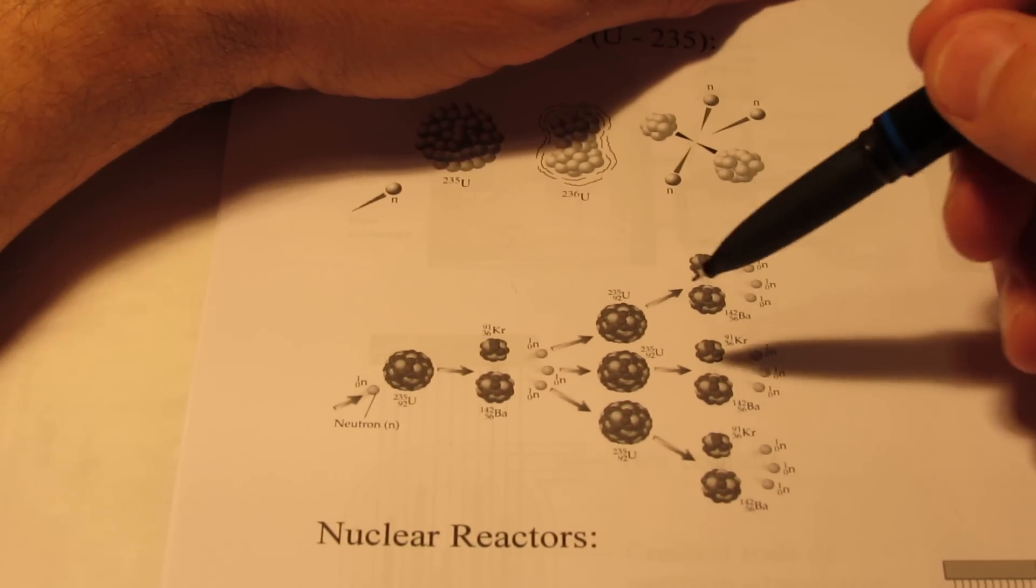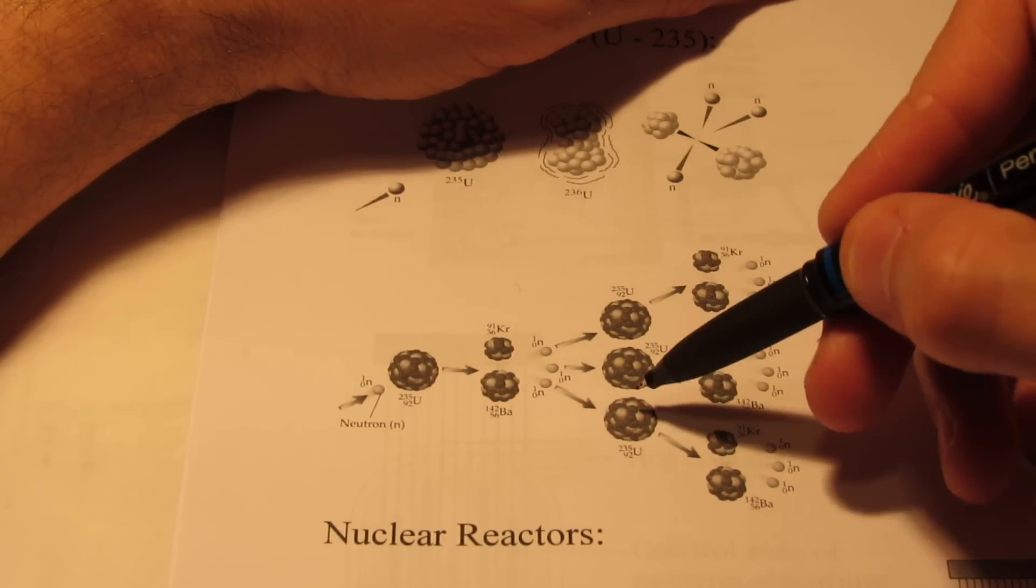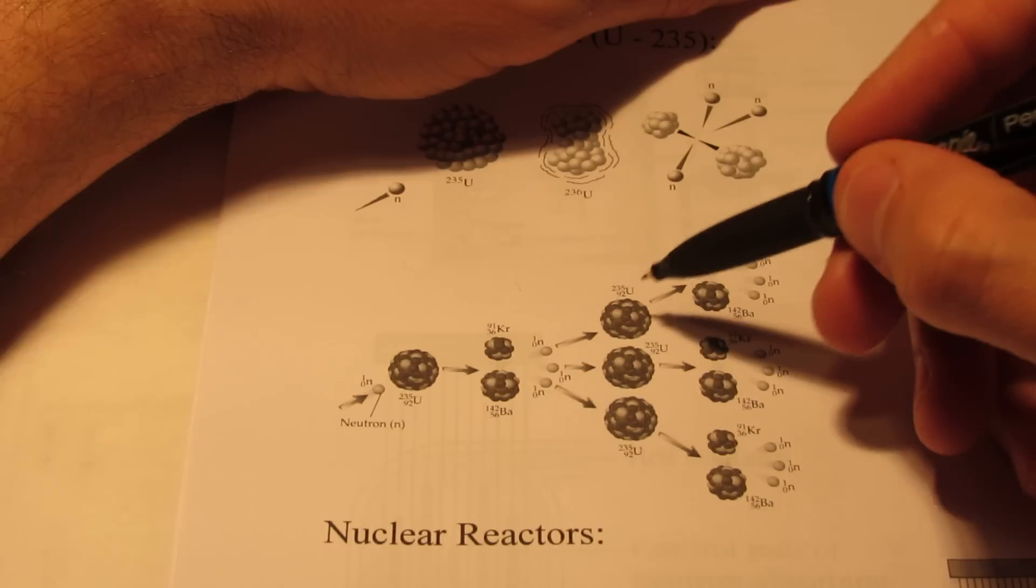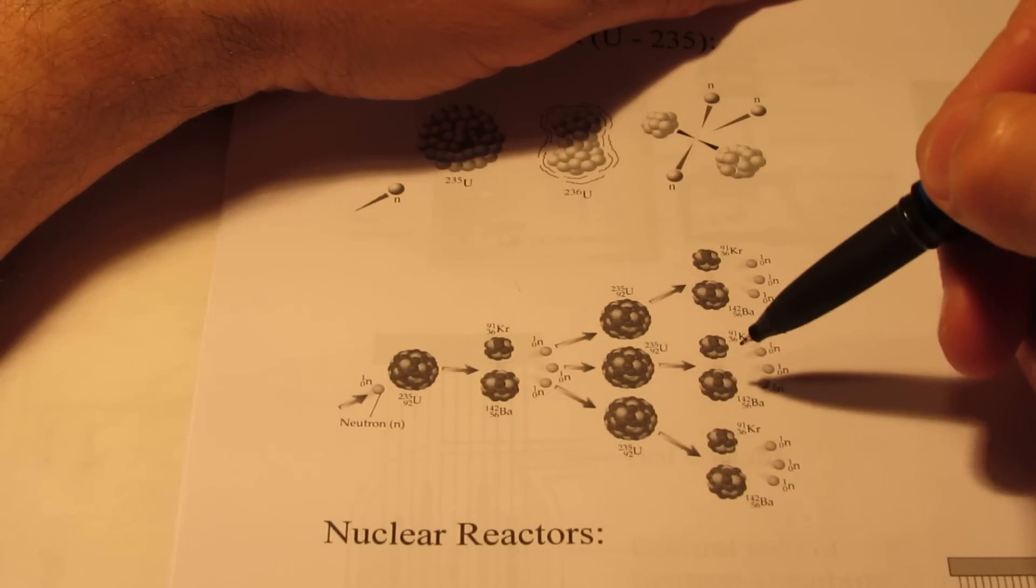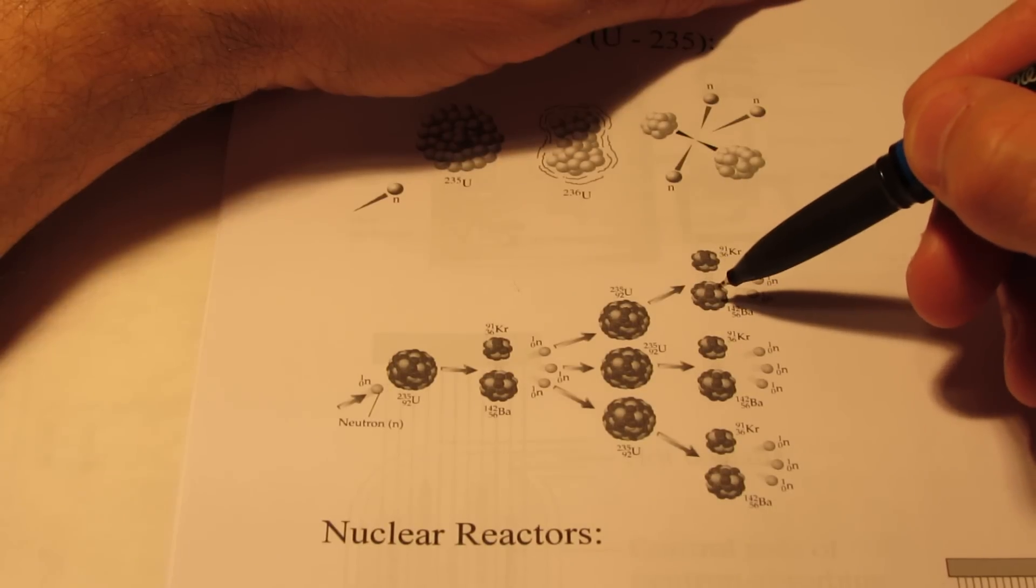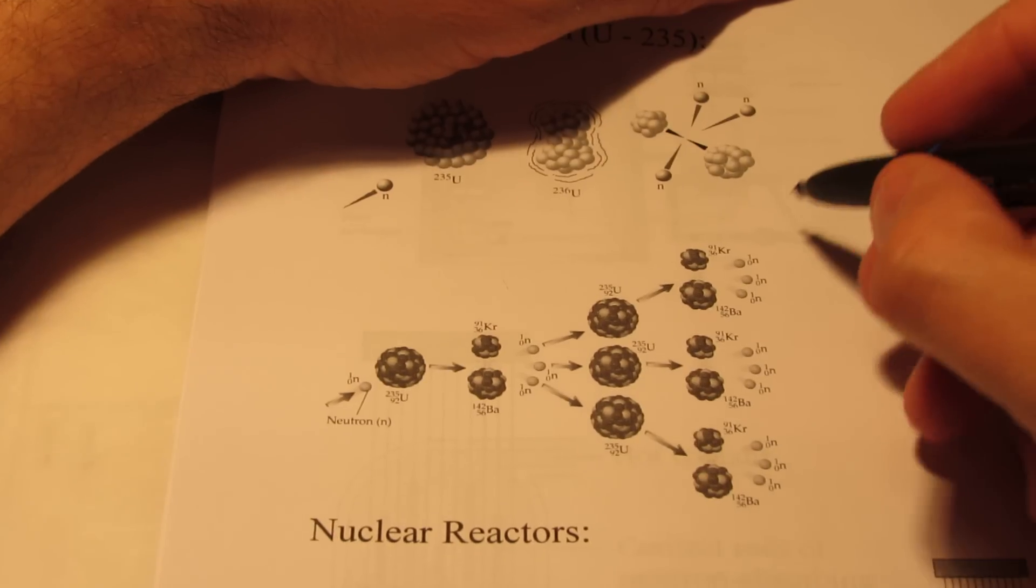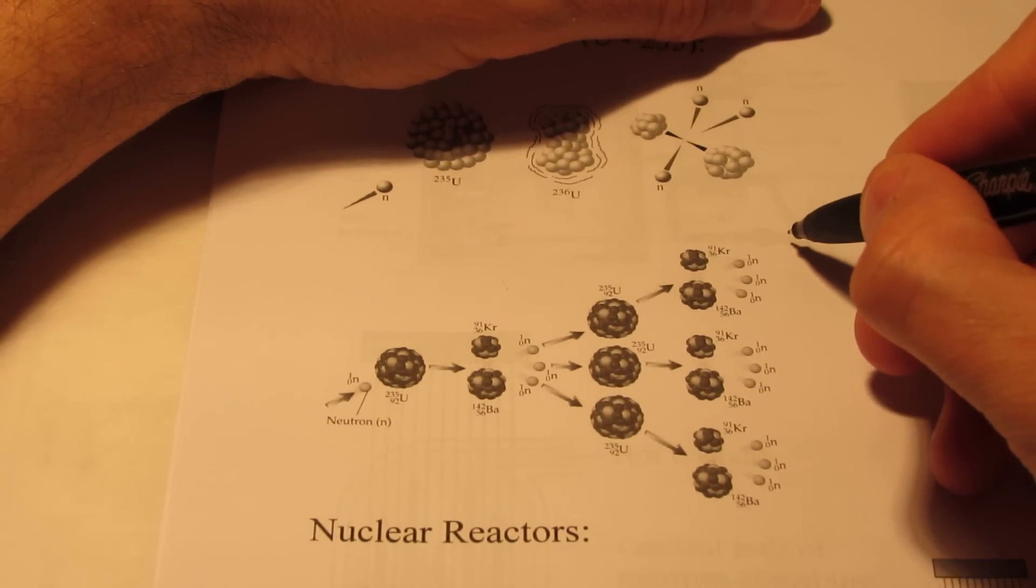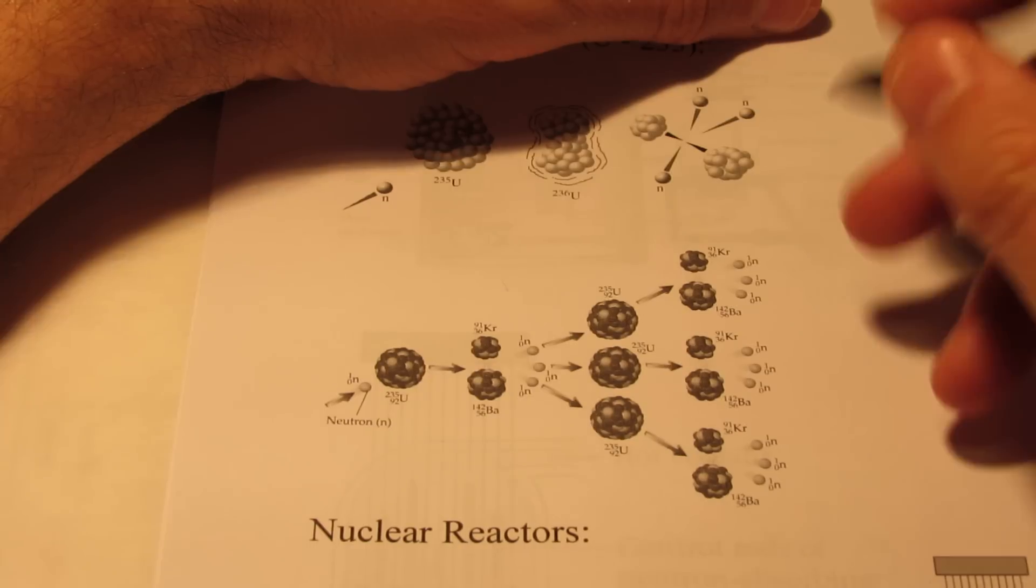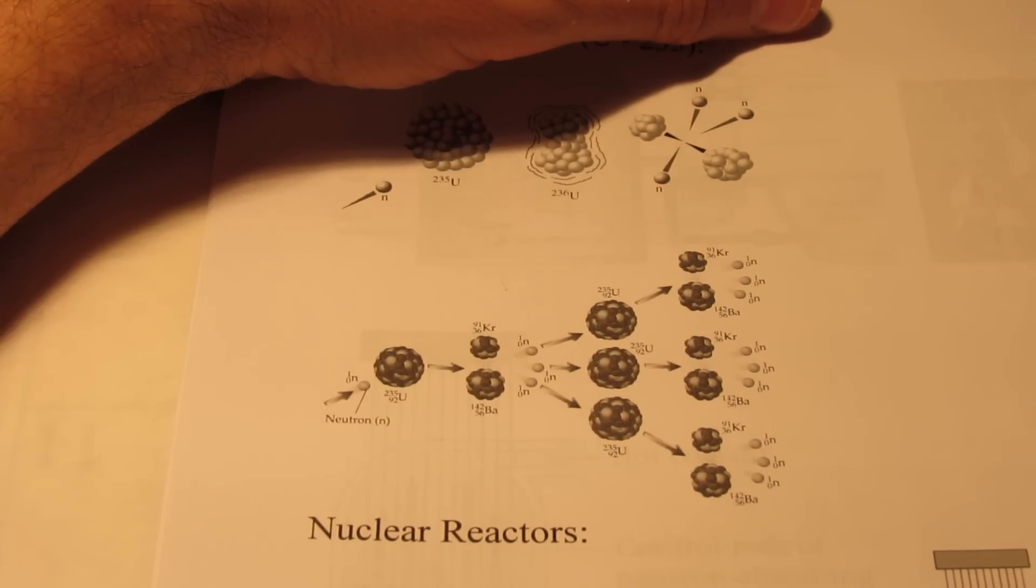Now if there are other uranium-235 nuclei around, they can then split those up to three in this case, which of course are going to produce each time those two lighter nuclei and three more neutrons. And those three neutrons can then split another uranium-235 atom, and the process gets exponentially larger.